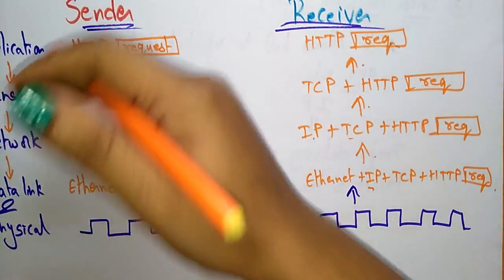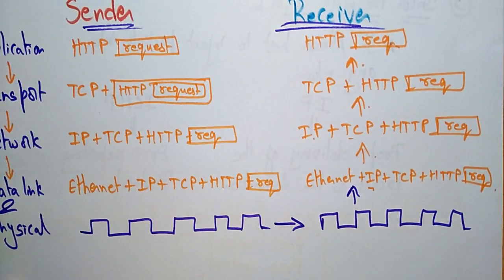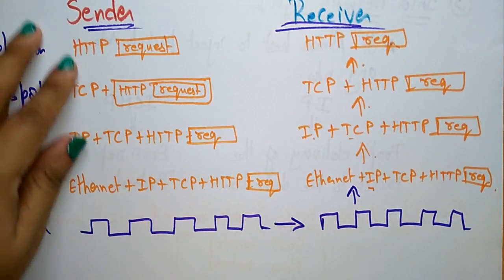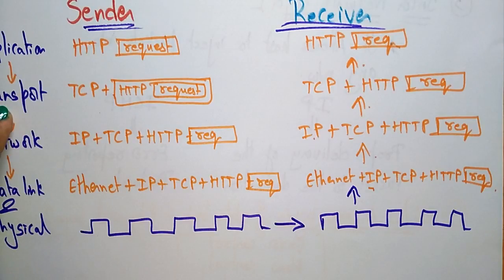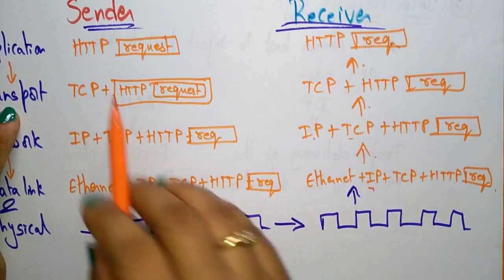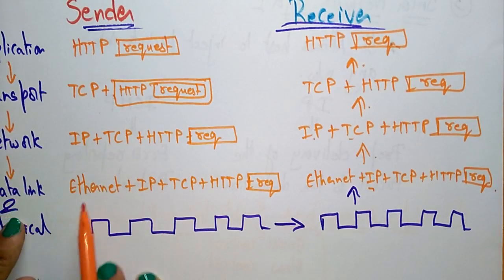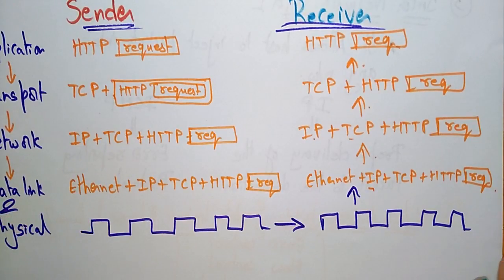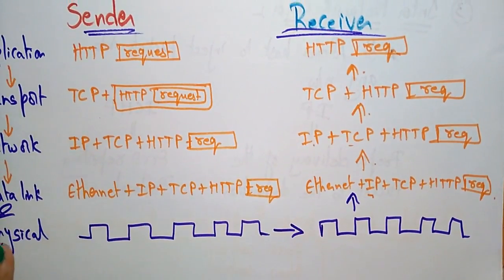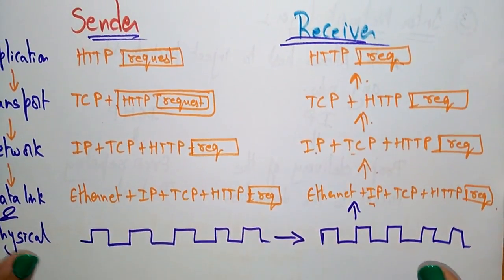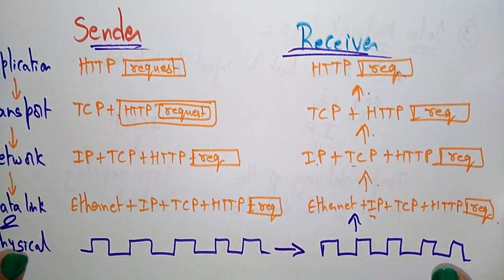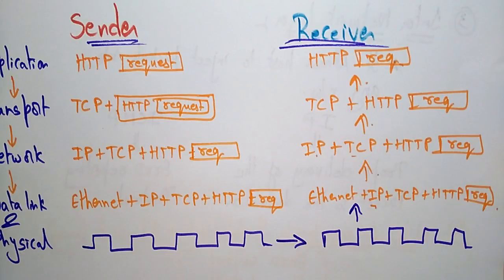This is how operations pass from one layer to another layer. The message is sent using HTTP, TCP, IP, and Ethernet at each respective layer. This concludes the TCP/IP reference model — thank you.